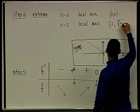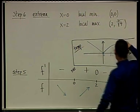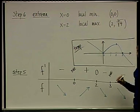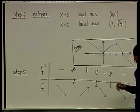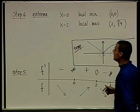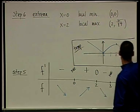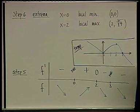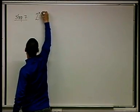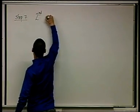At this point it's also good to have the actual y-value that corresponds. For x equals two, you plug it into the function and get the cube root of four — that's the actual point at this local maximum. Step seven is the second derivative.